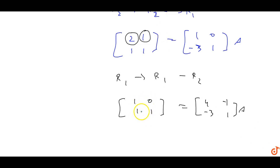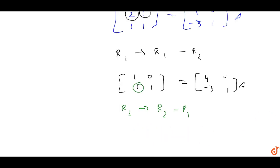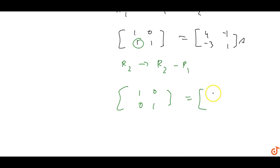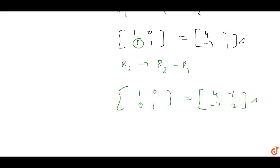Now R2 equals R2 minus R1. So we get one zero two. And then: four minus one minus three, minus four minus seven, one minus two two — into A.